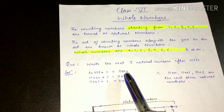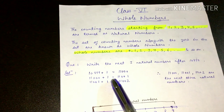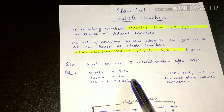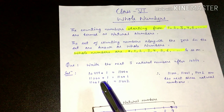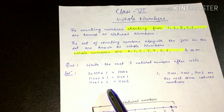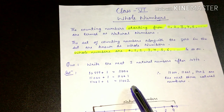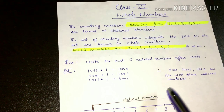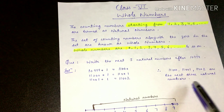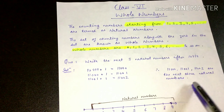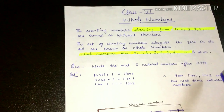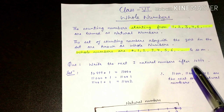Toh hum aise nikaal sakte hain: 10999 plus one equals 11000; 11000 plus one equals 11001; 11001 plus one equals 11002.